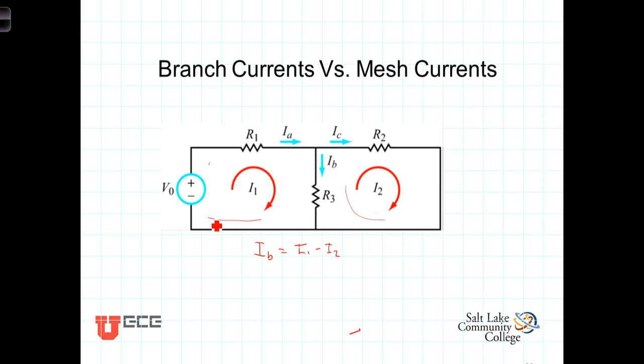On the other hand, I1 is this current flowing through here, and that current is in fact the branch current I sub A. So we can say then that I sub A is equal to I1, or more appropriately, more intuitively, we'd say that I1 is simply the branch current I sub A.